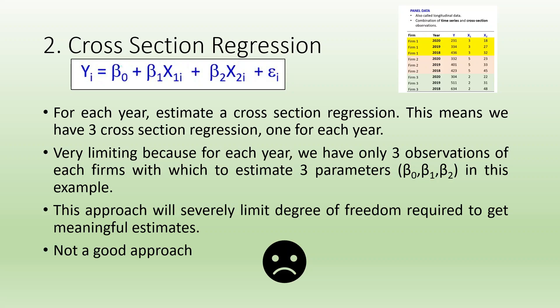If we run cross-section regression on panel data, for each year we estimate a cross-section regression, meaning we get three cross-section regressions — one for each year. This is very limiting because for each year we have only a few observations per firm with which to estimate parameters, making it a difficult task. This approach will severely limit the degrees of freedom required to get meaningful estimates — not a good approach.